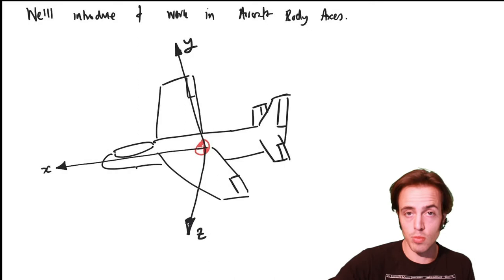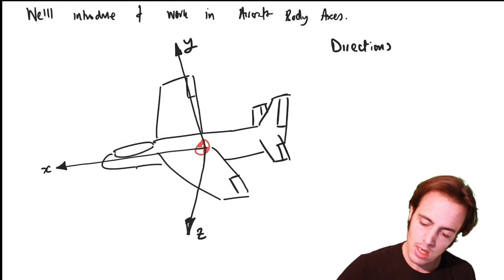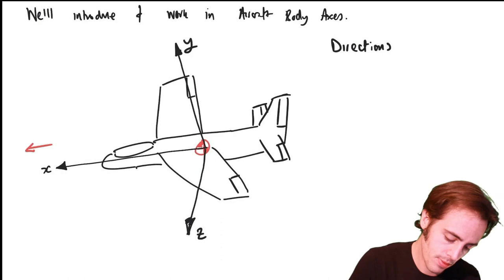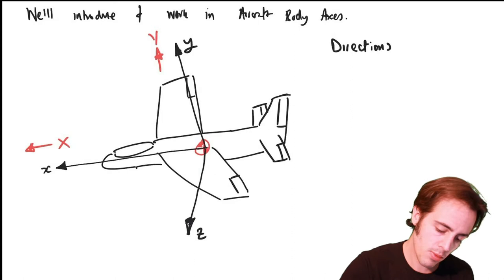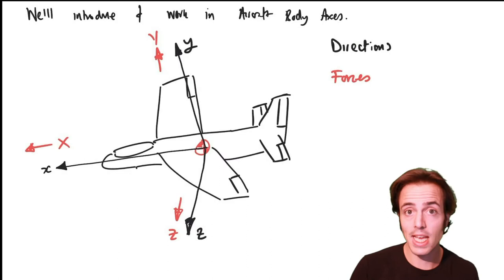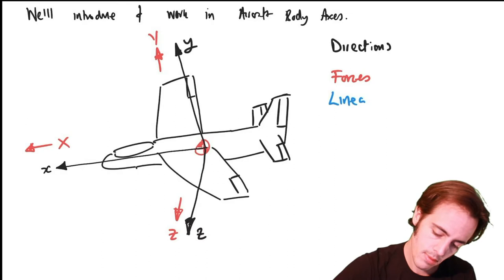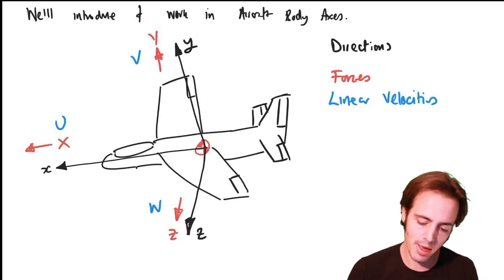We don't deal with forces as much in the static stability module, but it's good to get them written down now. Forces are uppercase X, uppercase Y, and uppercase Z. We've also got linear velocities: uppercase U, uppercase V, and uppercase W. It becomes very important when we want to linearize these equations later that these are uppercase.